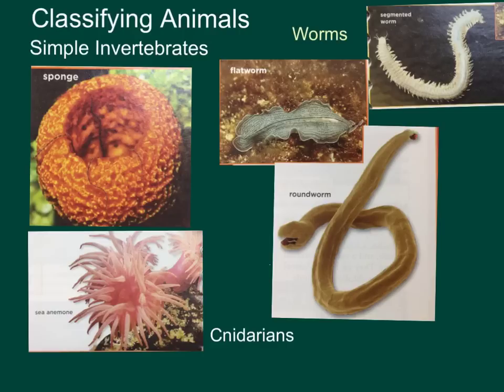An organism with radial symmetry has more than one line, so you can divide it into two images. Cnidarians have a mouth and tentacles with stinging cells, like the jellyfish. They have muscle tissues as well. They hunt, and their stingers shoot out like little harpoons. The poison inside those stinging cells helps them to capture other animals — that's how they get their food.